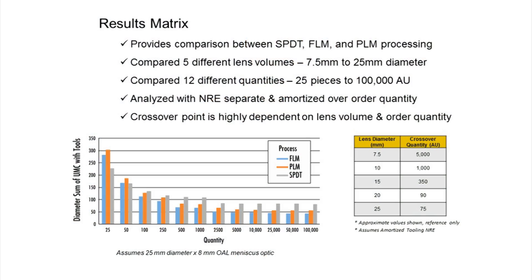Looking at cost: when does diamond turning make sense, and when does molding make sense? From this chart, as you start increasing in diameter, molding becomes more and more cost competitive. With a 25 millimeter diameter meniscus lens, by the time you reach 75 pieces, molding is more economical than diamond turning.